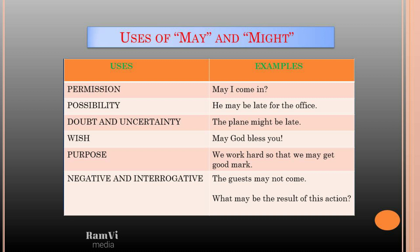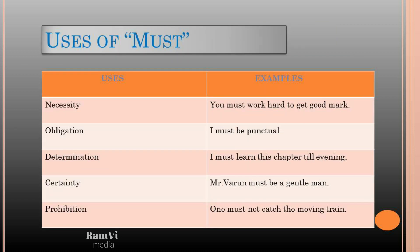The next modal is 'must'. It is stronger than 'should'. Here are the uses: first, necessity — 'You must work hard to get good marks.' In order to emphasize the need, we use 'must'. Next, obligation — if you want to emphasize your duty, you use 'must'. For example, 'I must be punctual' — it is our duty.